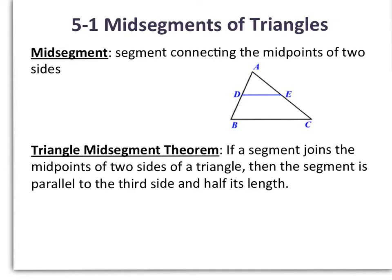A midsegment is a segment connecting the midpoints of two sides. So in our triangle on the right, if we're told that points D and E are midpoints, then we could say that side DE is a midsegment of triangle ACB.